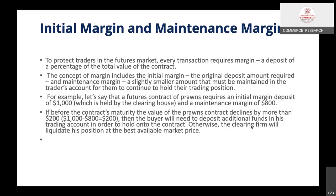If a person is in a profit position, they do not need to pay maintenance margin. But if in a loss position, they must pay the maintenance margin. For example, a futures contract of bronze requires an initial margin deposit of $1,000 held by the clearinghouse, and the maintenance margin is $800. If the value of the contract declines by more than $200 — that is, $1,000 minus $800 — the buyer will need to deposit additional funds to hold on to the contract.